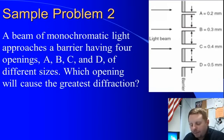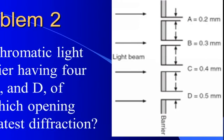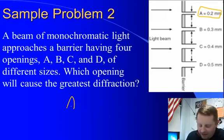Or another problem, we have a beam of monochromatic light, single color light, or single frequency light. And it approaches a barrier having four openings, A, B, C, and D. Each of those openings has a different size. Which opening will cause the greatest diffraction? Well, you'll get the greatest diffraction with long wavelengths, they all have the same wavelengths, so that's not a factor, and the smallest opening. And the smallest opening is A, the 0.2 mm opening. So you'll get the most diffraction at A.